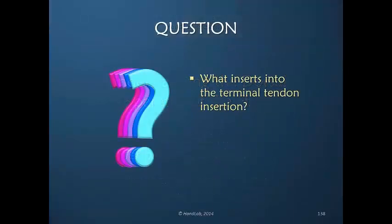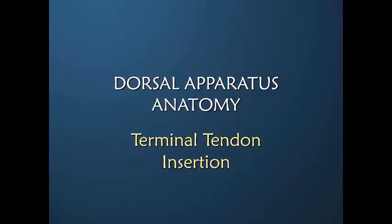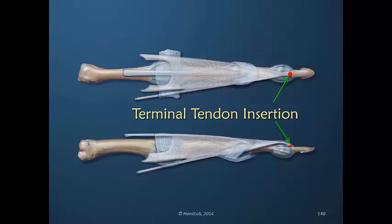As we move on, let me ask you what exactly inserts into the terminal tendon insertion. What in your mind's eye would contribute to tension at the terminal tendon insertion? Well, let's look at this more carefully. The terminal tendon insertion is the end of the dorsal apparatus, and it's a very simple answer: any power that is distributed into the dorsal apparatus continues out to the terminal tendon insertion.